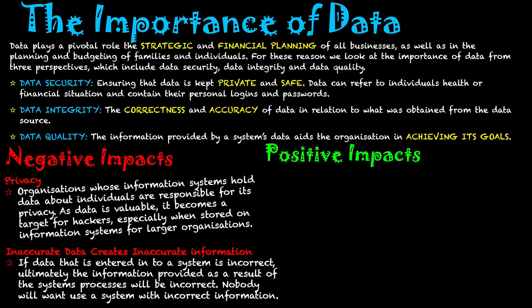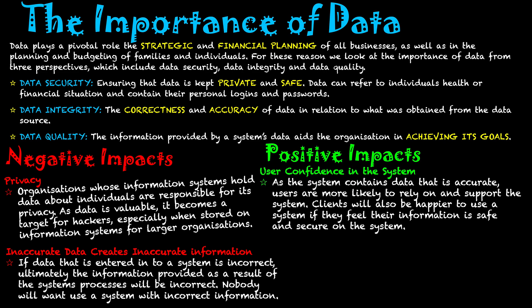On the positive side, if we do have a system that upholds these three areas, we're going to get user confidence in the system. They're going to be happy to use it because the data is accurate, and users are more likely to rely on and support the system. Clients will also be happy to use the system if they feel the information system is safe and secure and keeping their data safe. Users will be more confident because the data they get out of it is correct, up to date, and provides quality data to them — and the data they enter, whether about themselves or their job, will be kept safe because the system is secure.